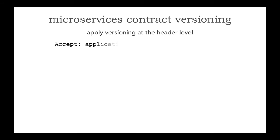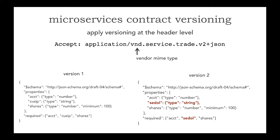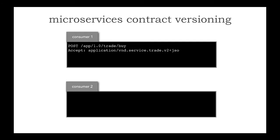I'm going to use an example with REST. What I can do here is in the Accept header, I can use something called a vendor MIME type to say VND.service.trade version 2 of a JSON contract. Here's version 1 for backwards compatibility, which uses a QCIP. Version 2 uses the CDOL. Now let's place two trades. Consumer 1 does a trade buy for account 12345, CDOL 2046251, and this works perfectly fine. Notice the Accept header — this is saying use version 2 of JSON, and it certainly is valid.